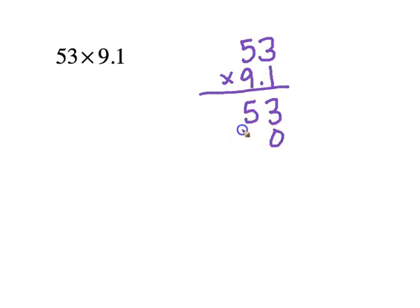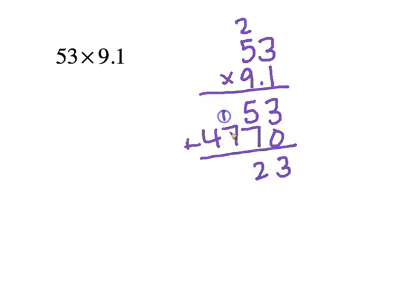Next example. Now we're moving on to multiplication. So with multiplication, you don't have to line things up. Simply write the numbers out. 53 times 9 and 1 tenths. You're just going to multiply like you normally would. 1 times 3 is 3. 1 times 5 is 5. 9 times 3 is 27. 9 times 5 is 45, plus 2 is 47. Now we're just going to add, 3 plus 0 is 3. 5 plus 7 is 12. Carry 1. Excuse me, 8. And then bring down that 4.